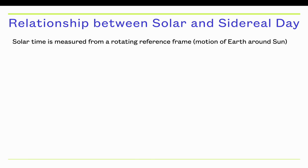Can we derive a relationship between the solar and sidereal day? We're going to define solar time as measured from a rotating reference frame of the Earth as we're going around the Sun. We'll define the angular velocity of the spinning of the Earth from an inertial reference frame. We'll call that Omega_SID, and SID is going to stand for sidereal, which is the astronomers way of saying inertial.